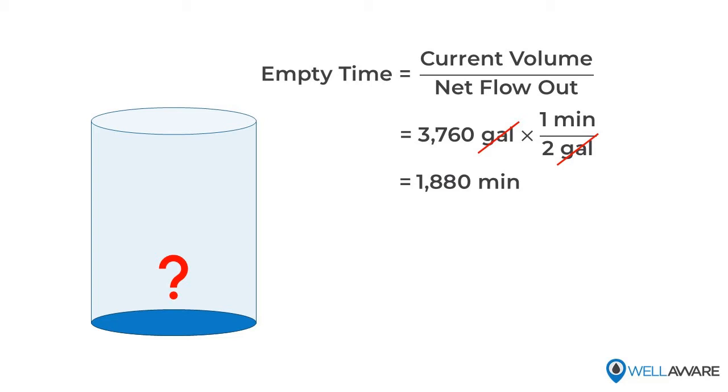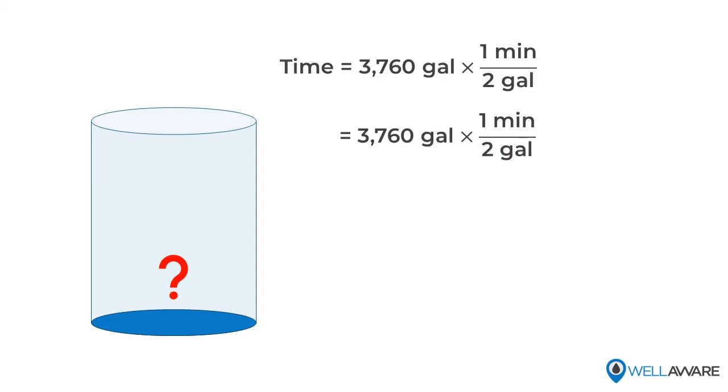So we now know that our tank will be empty in 1,880 minutes. Of course, it's not a very helpful way of visualizing it. If we wanted to convert it to hours, we could further divide by 60 minutes per hour, cancel units, and see that we have 31 and a third hours until empty. We could continue to convert this to days by dividing by 24 hours per day and see that we have a little more than one day until our tank runs empty. And there you have it - that's how you can predict when your tank will run empty.